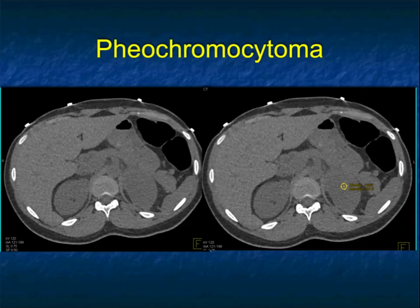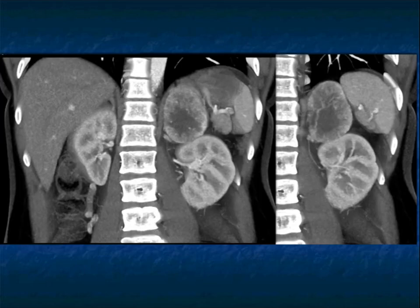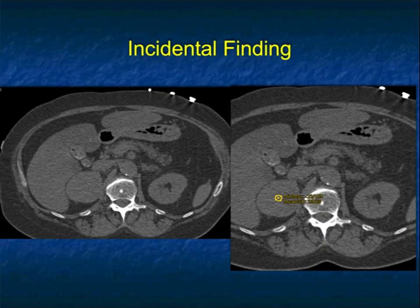Another example — look at this patient's left adrenal on the non-contrast scan. When you give IV contrast, unlike the last case where the adrenal was very diffusely vascular, here you see more central necrosis. Could this be a primary adrenal carcinoma? Could this be a met? This is just to show you that pheos are not always purely vascular. Here it is on the reconstruction view, nicely sitting by the upper pole of the left kidney.